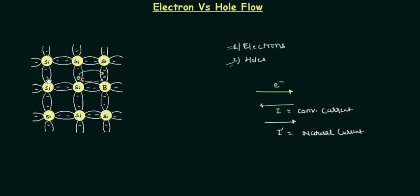Again, the neighboring electron will move, and we have an electron here. This electron has moved to this point, so the hole was at this point but now, because of the movement of this electron, we have a hole at this silicon atom. So initially the hole was here, then it moved to this point, and then it moved again to this point. The direction of the current is the same as the direction of the hole — from right to left — so the hole has the same direction as the direction of current.